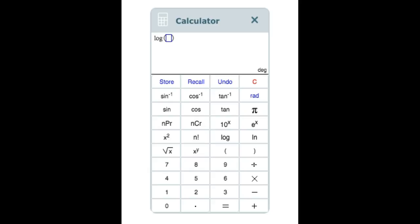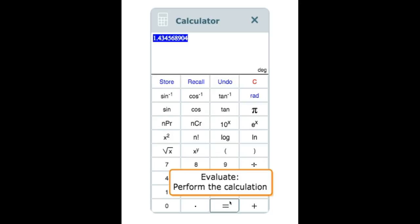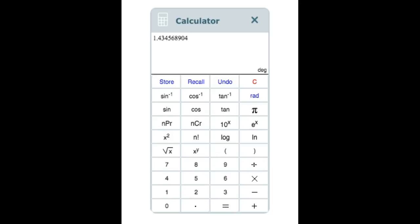What do we do next? We enter 27.2 and click the equal sign button. This gives us the calculator's evaluation of log of 27.2, which equals 1.4345.